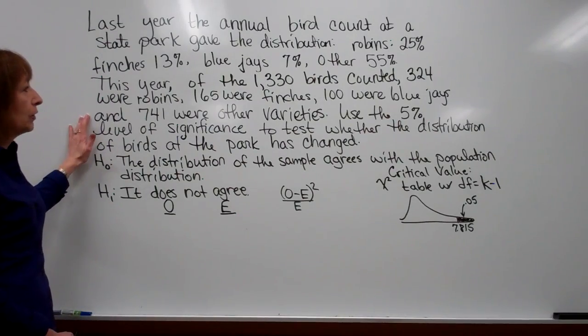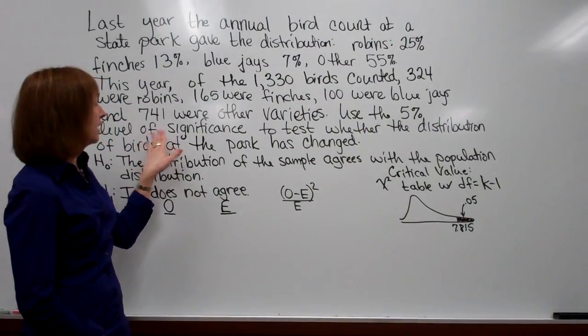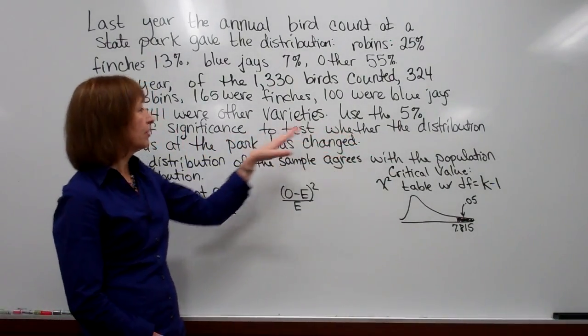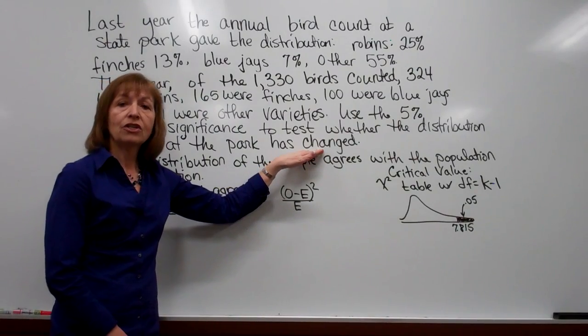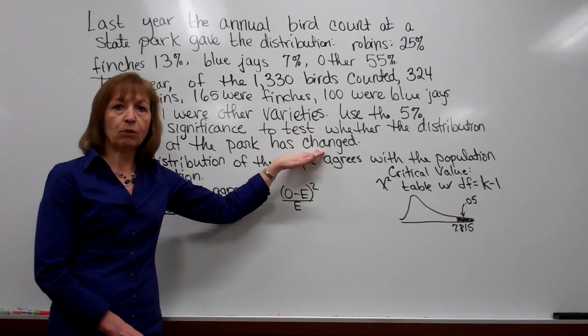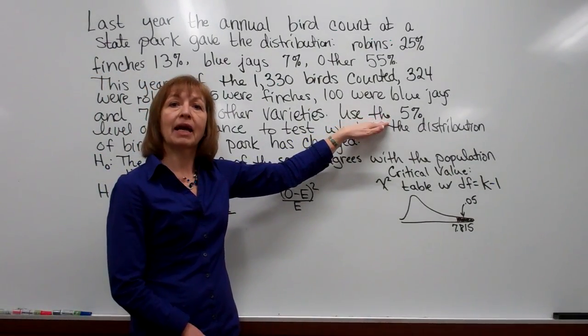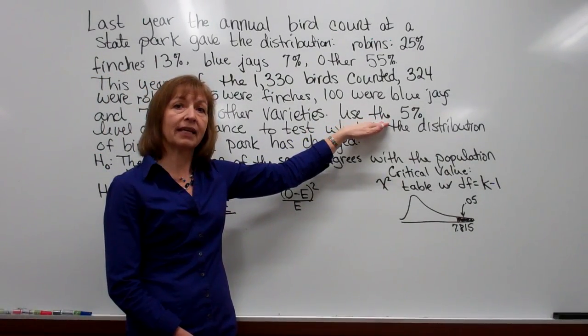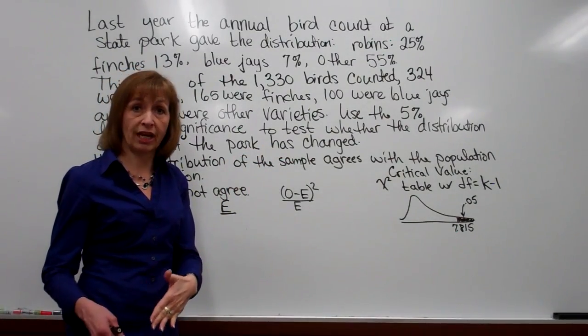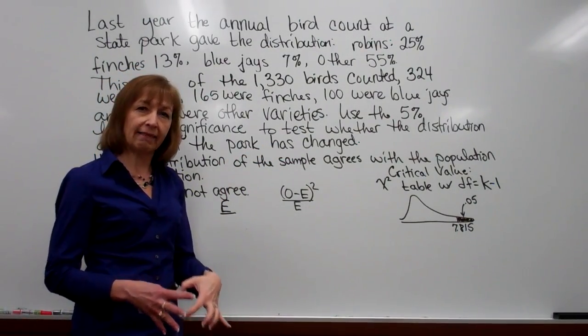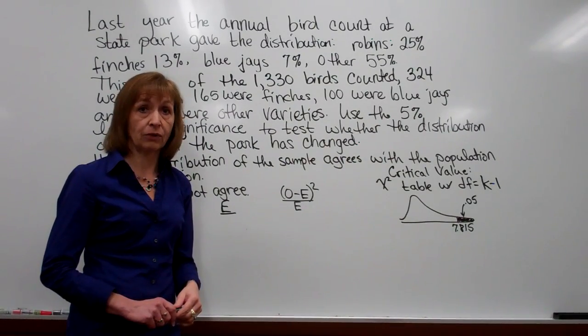Now when we're looking at the rest of the question, it says use the five percent level of significance to test whether the distribution of birds at this park has changed. So here's where I really know that they want me to do a goodness of fit hypothesis test. When the wording is like that, it is a goodness of fit sort of question that they're asking you to do.